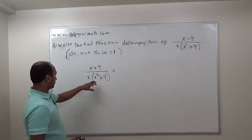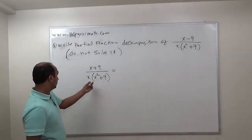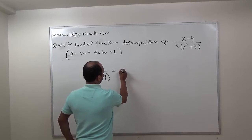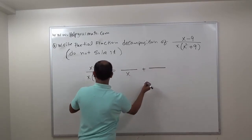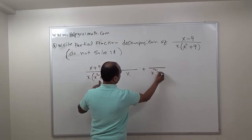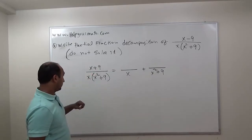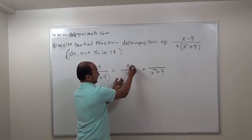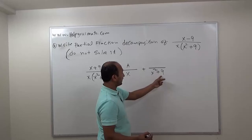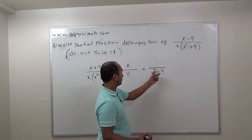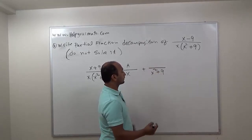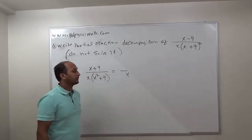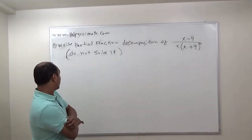We look at the denominator to see if we can factor. There's not much to factor — x is a factor and x squared plus 9 is a factor. So we write x, then x squared plus 9. We cannot factor x squared plus 9 further. The degree difference on top should be one. Since x is a linear term, we write A. Since x squared plus 9 is a second-degree binomial, the numerator should be one degree less, so we write Bx plus C.